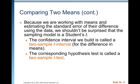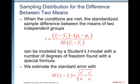Because we are working with means and estimating the standard error of their difference using the data, we shouldn't be surprised that the sampling model is the Student's t model. The confidence interval we build is called a two-sample t interval for the difference in means. The corresponding hypothesis test is called a two-sample t test. When the conditions are met, the standardized sample difference between the means of two independent groups is t equals the difference in the sample means minus the difference in the means of the population, divided by the standard error of the difference in the sample means.